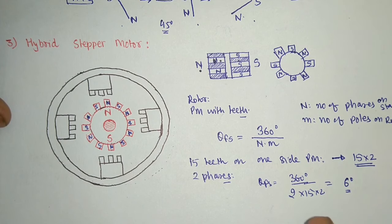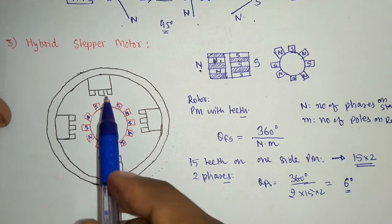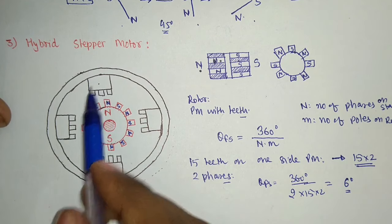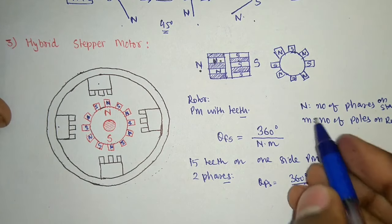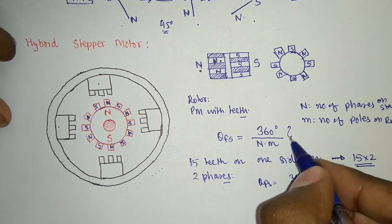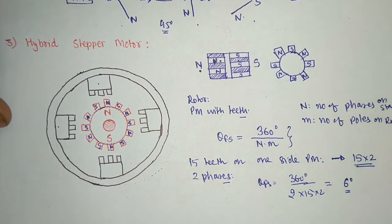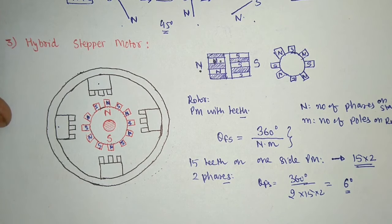The number of phases is not necessarily equal to the number of poles on the stator. This is the main formula to calculate theta_FS when given the number of phases and number of poles; otherwise we can also use theta_rotor minus theta_stator.